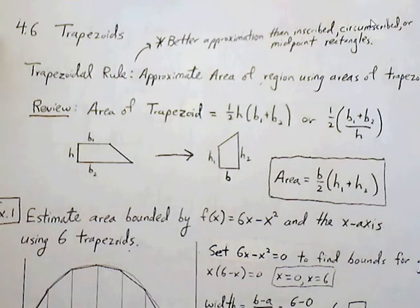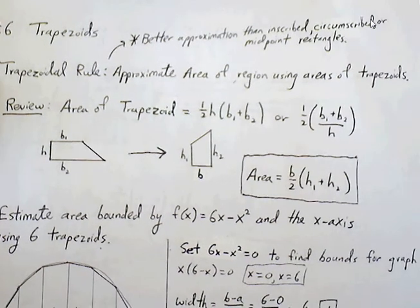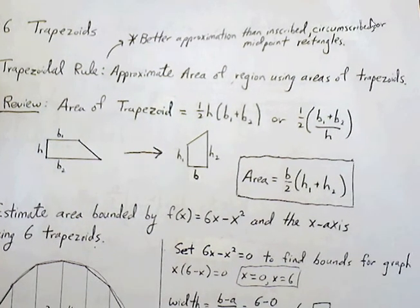Okay, let's look at section 4.6. This is dealing with trapezoids. So the trapezoidal rule is simply approximating the area of a region using areas of trapezoids.